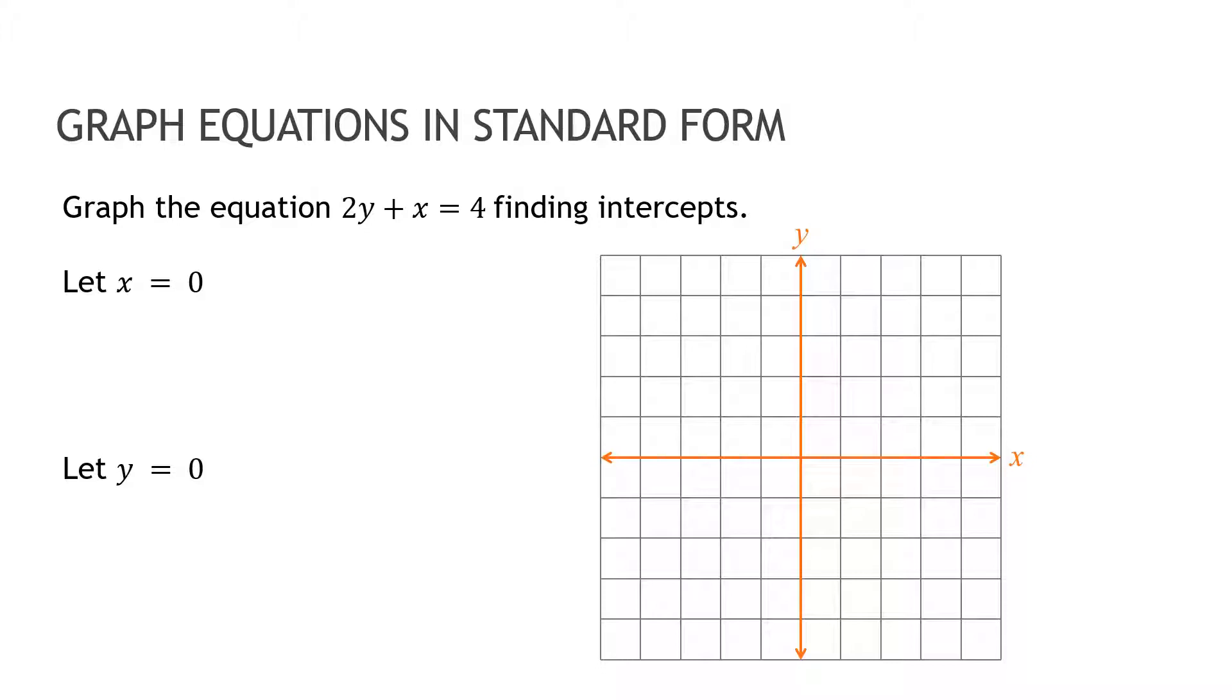So if I'm trying to find the intercepts, and again, this is in standard form because x and y are on the same side of the equation, I'm just going to recopy this equation twice: 2y plus x equals four. And what's essentially happening is when I let x equals zero, this plus x is going away completely. So I call it the cover-up trick, because I'm really covering up plus x and seeing what's left over. And what's left over is 2y equals four, which is super easy to solve. I get y equals two.